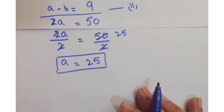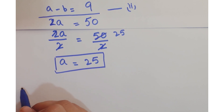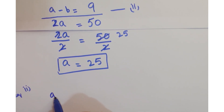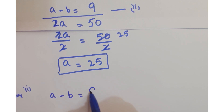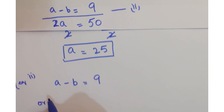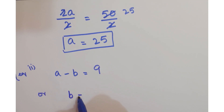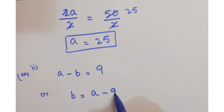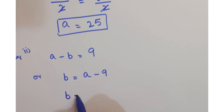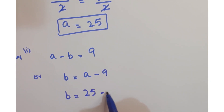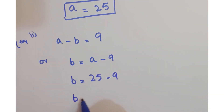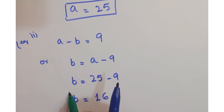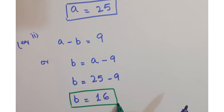Now, putting this value of a into equation 2: a minus b equals 9, so b equals a minus 9. Putting in the value of a, you get 25 minus 9, so b equals 16. We have now calculated the values of a and b.